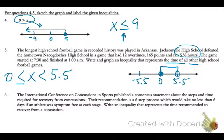Number 6: the International Conference on Concussions in Sports published a consensus statement about the steps and time required for recovery from concussions. Their recommendation is a six-step process which would take no less than six days if an athlete was symptom-free at each stage. We need to write an inequality representing the recommended recovery time. The time is x, and it needs to show no less than six, so that means it needs to be greater than or equal to.